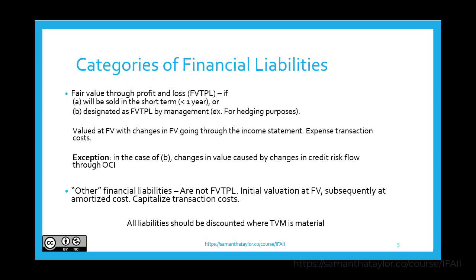Categories of financial liabilities — items settled in cash — include fair value through profit and loss (FVTPL). These are typically held in the short term or designated as FVTPL by management, for example for hedging purposes. Whenever a liability is FVTPL, any fluctuations in fair value go through the income statement. And because they go to the income statement, any transaction costs associated with this financial liability are expensed immediately — don't capitalize them just to then expense them. Just expense them right away.